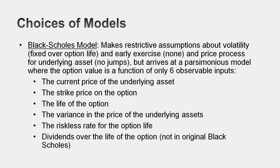There are two basic option pricing models you might run into in practice. The first is the Black-Scholes model, which invented option pricing as we know it. In Black-Scholes, options are assumed to be European — exercisable only at expiration — the variance of the underlying asset remains fixed over the life of the option, and prices move continuously without jumps. These are big assumptions, but they yield a very simple model with only six inputs: the value of the underlying asset, the strike price, the life of the option, the riskless rate, the time to expiration, and the variance in the value of the underlying asset.